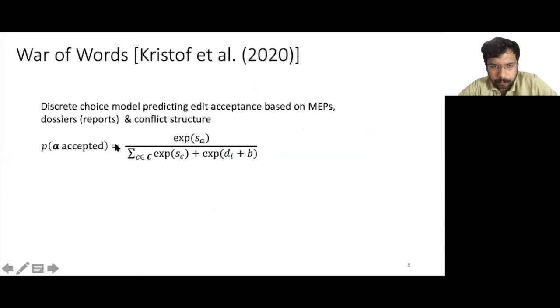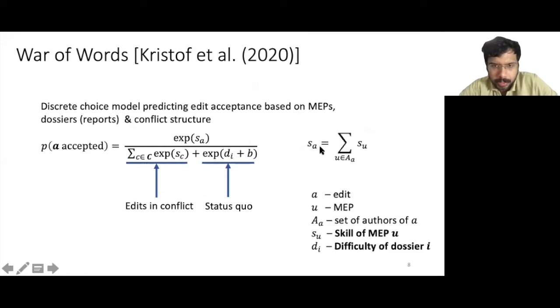This model had this form. The probability of the edit A to be accepted is proportional to the exponential of this term SA. In the denominator, this term corresponds to the sum over all the edits in a conflict, and this term corresponds to the probability of status quo being kept. The term SA is a sum over the terms SU, which represent the skills of the MEPs who are authors of the edit A. The term DI here in the denominator represents the difficulty of editing dossier I.